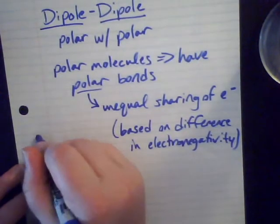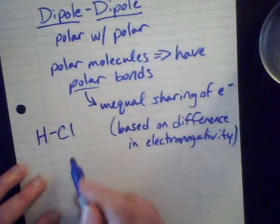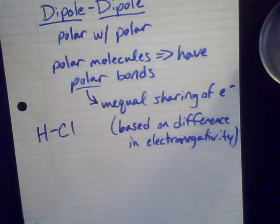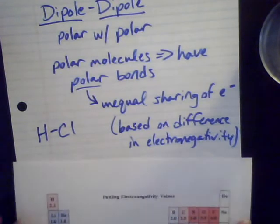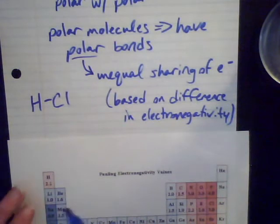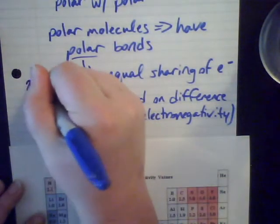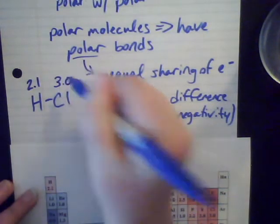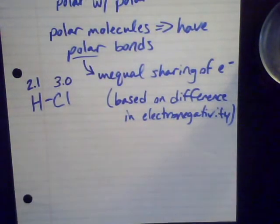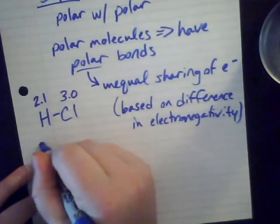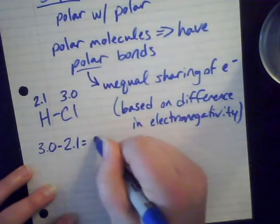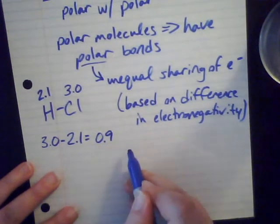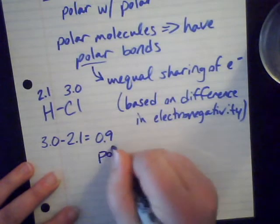The example we gave before was the molecule HCl, which is hydrochloric acid or hydrogen chloride. If we look at the Pauling electronegativity scale, hydrogen is 2.1 and chlorine is 3.0. When I take the difference — 3.0 minus 2.1 — I get a difference of 0.9, which is in between 0.4 and 1.7. So that means this is a polar bond.